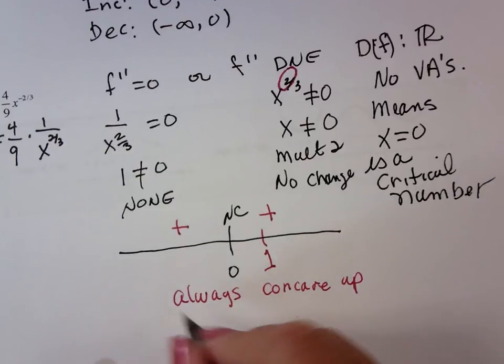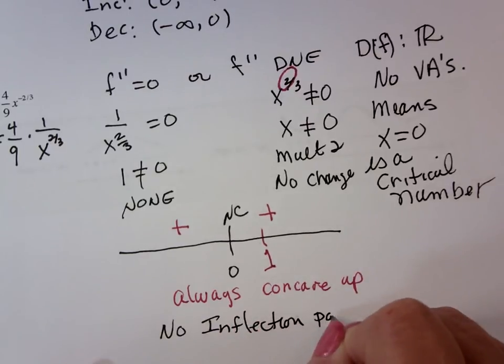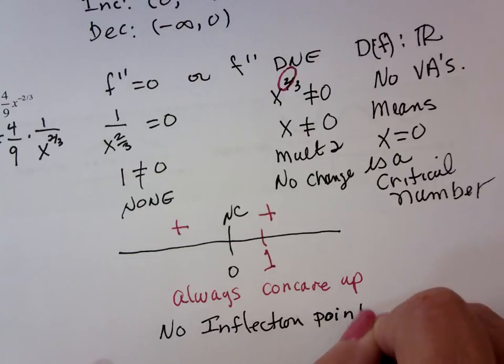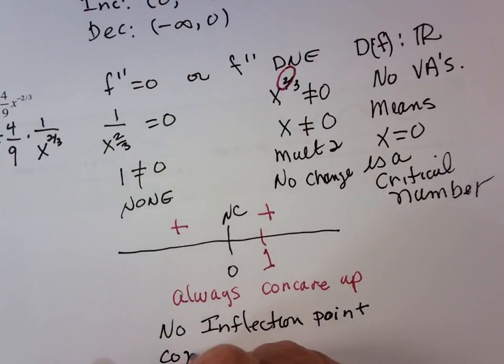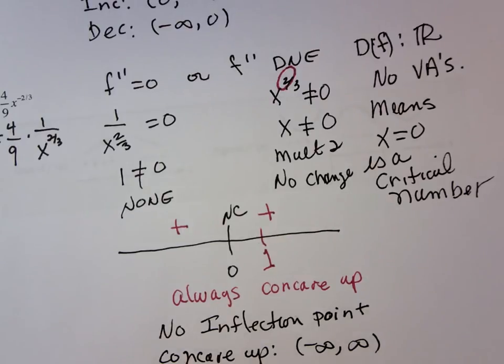So what do I know? He has no inflection point and he's concave up from minus infinity to infinity. We're not done. Turn back to the previous page.